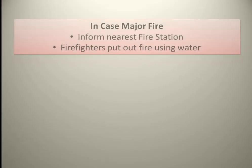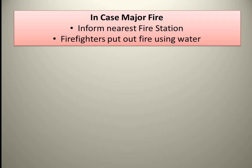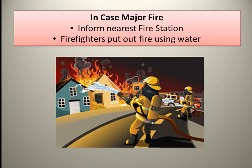In case of a major fire — fire in a big building, at your school, or at your home — first, inform the nearest fire station. You should always keep the fire station number handy. The firefighters from the fire station will come and put out the fire using water. This covers all the different causes of fire, prevention rules, types of fire, and methods to put them out.